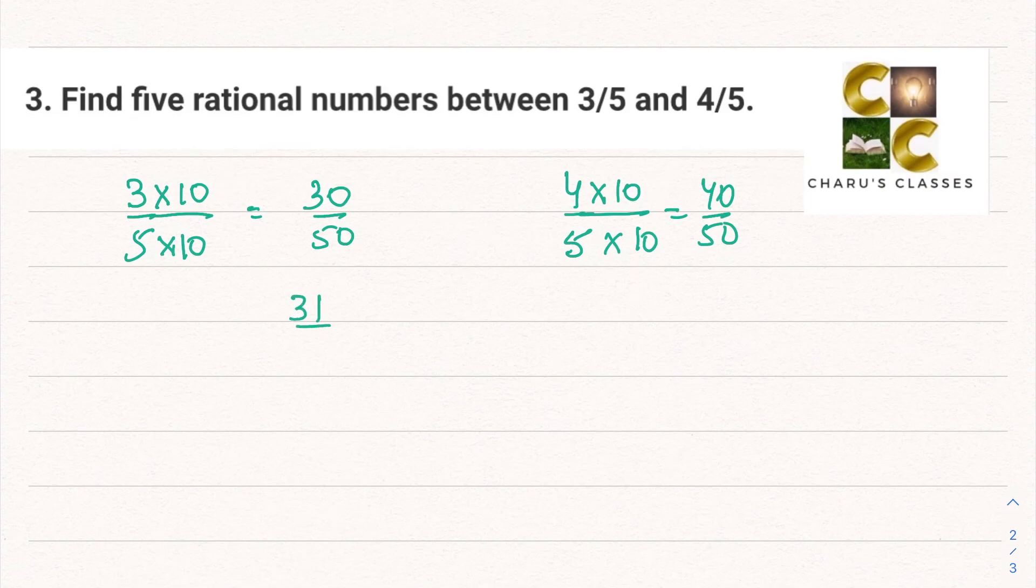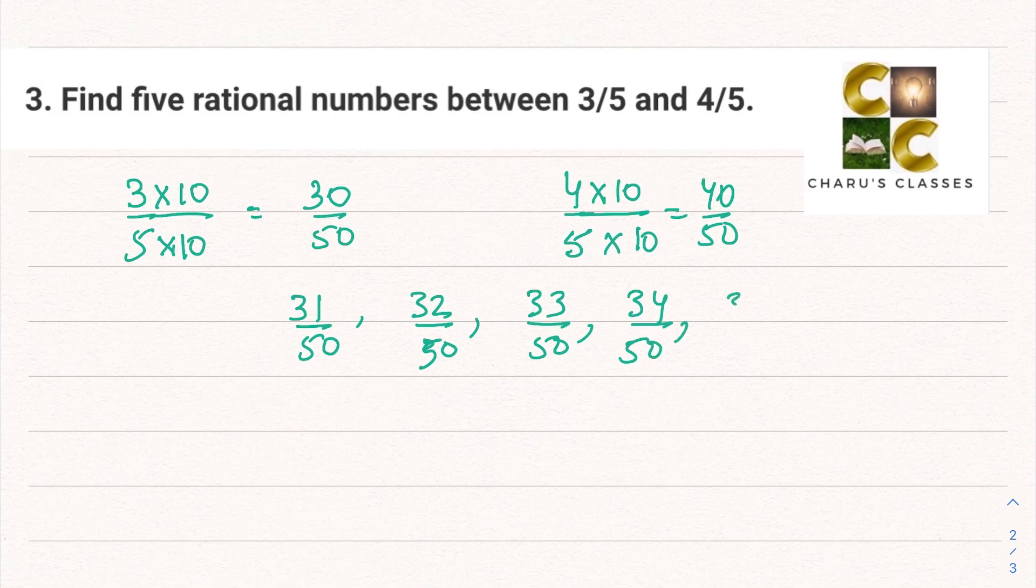Between 30 by 50 and 40 by 50, I can have 31 by 50, 32 by 50, 33 by 50, 34 by 50, and 35 by 50. These rational numbers are between 3 by 5 and 4 by 5.